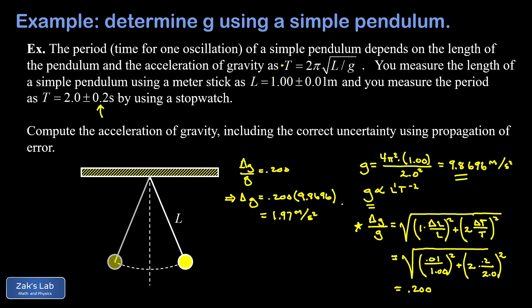Now I do want to mention a common convention for what to do with uncertainties. In my classes, I usually ask the students to round the uncertainty to one significant digit. In other words, we're going to call this delta 2 meters per second squared, and then round the original quantity that you calculated to that same decimal place.